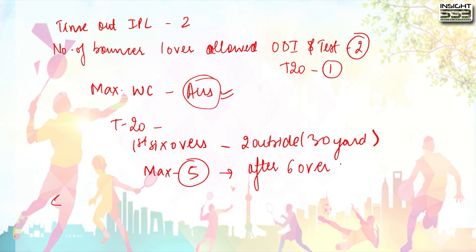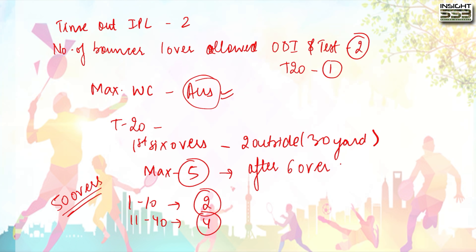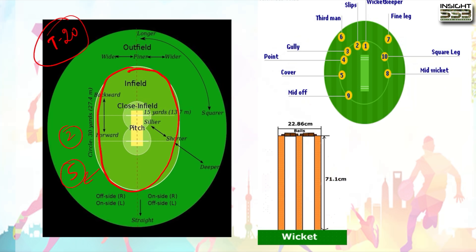In the 50-over power play format: from overs 1 to 10, no more than two fielders can stand outside the circle; from 11 to 40, no more than four can be outside; and from 41 to 50, no more than five can be outside. In power play the batting team gets the benefit, while in later phases the fielding team benefits.